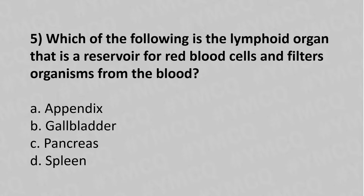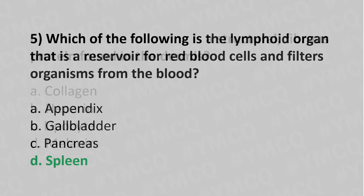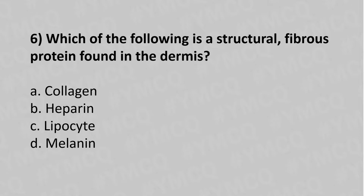Now let's move to question number five: Which of the following is the lymphoid organ that is the reservoir of red blood cells and filters organisms from the blood? Option A: appendix. Option B: gallbladder. Option C: pancreas. Option D: spleen. The answer is Option D: spleen.